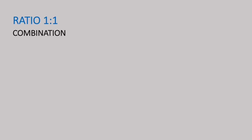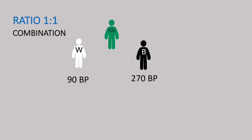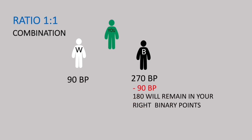Here is the 1 to 1 combination package. This is you — you invited one white package on your left and one black package on your right. The white package has 90 binary points and the black package has 270 binary points. We take 90 points from the 270, and 180 will remain on your right binary points. Summing all: 90 binary points from left plus 90 binary points from right equals 180 binary points.